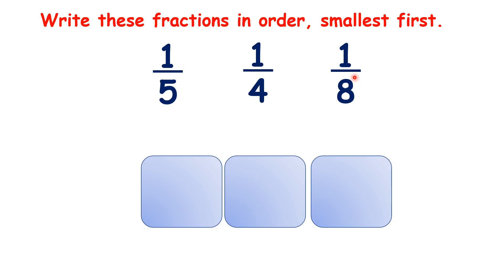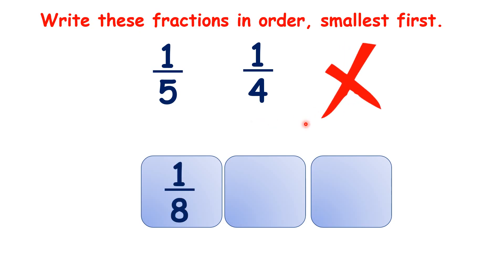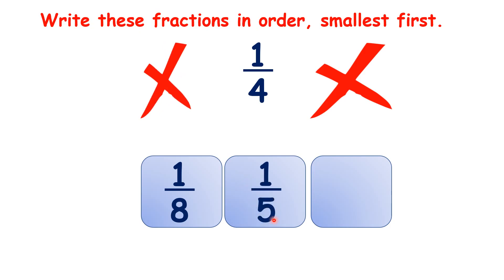Now all of these fractions have the same numerator, so here we're just looking at the denominator of each fraction. So which of these is the smallest? One-eighth is the smallest, then one-fifth, then one-quarter.